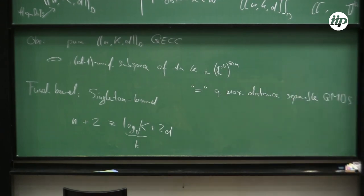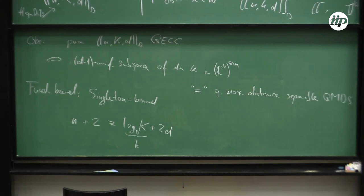The Singleton bound is called fundamental because it arises from a no-cloning argument — from the entropic conditions for a code or from sub-additivity. It says N + 2 ≥ log_D(K) + 2d, or equivalently n + 2 ≥ k + 2d. If you have equality in this bound, the codes are called quantum maximum distance separable, or quantum MDS codes.